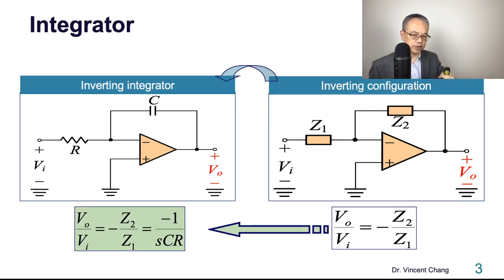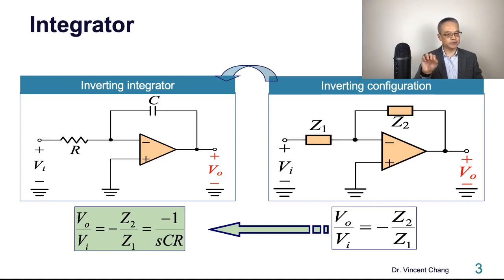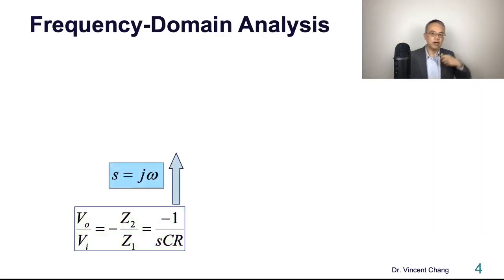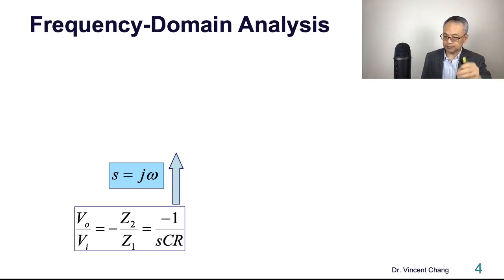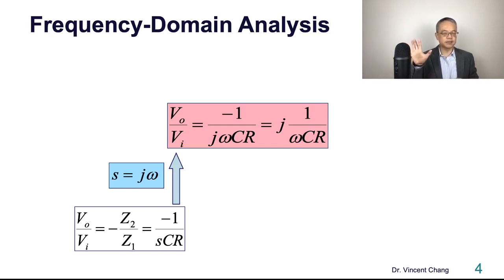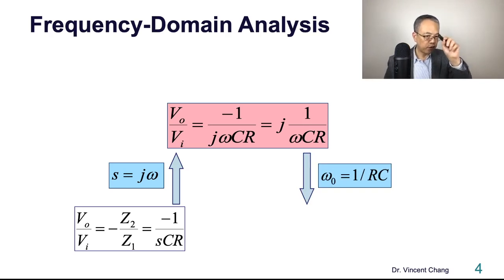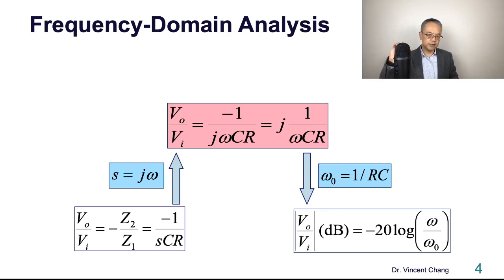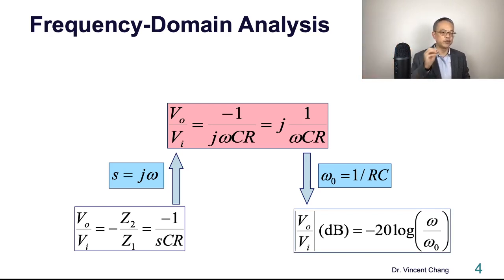The closed loop transfer function — if you do the S-domain analysis — is negative one over SRC. So now for frequency domain analysis, once we get the transfer function we replace S by jω. S represents the complex frequency; ω represents the physical frequency. So the closed loop transfer function becomes complex. We can define the inverse of the time constant as a frequency called ω₀. The magnitude of the transfer function can be expressed as negative 20 log(ω / ω₀). Pay attention to the negative sign.